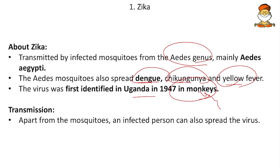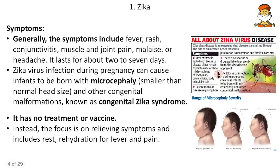The mode of transmission apart from mosquitoes: an infected person can also spread the virus through contact with feces, mucus and other body fluids. Symptoms generally include fever, rashes, conjunctivitis (eye sores), muscle pain, joint pain and others, and the illness lasts for two to seven days.